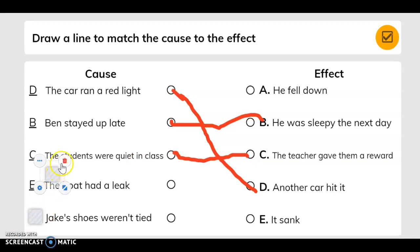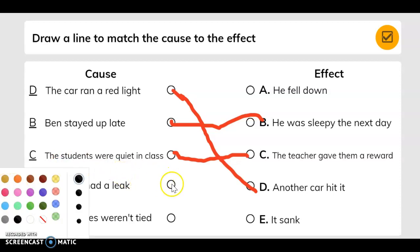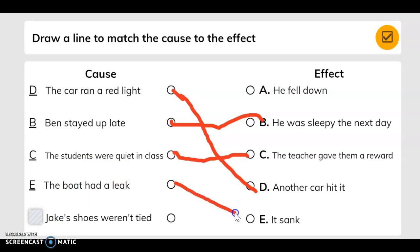The boat had a leak. The answer for this one, the effect is it sank. And the last one, Jake's shoes weren't tied. And the effect was he fell down. And that's A.